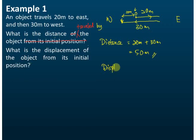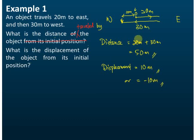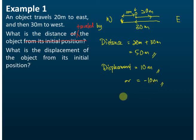So the displacement is equal to 10 meters. Now some students may argue it should be negative 10 meters — that is also correct, because it depends on which direction you define as the positive direction. If you take the left-hand side as positive, the displacement is 10 meters. If you take the right-hand side as positive, then the left-hand side is negative, so the displacement will be negative 10 meters. You are the one who decides which direction to take as the positive direction.